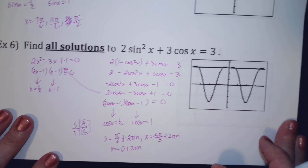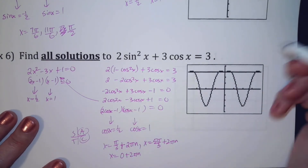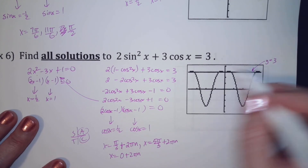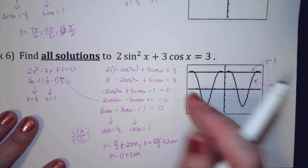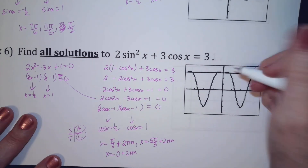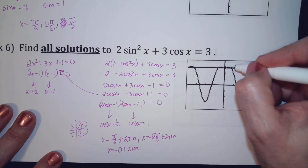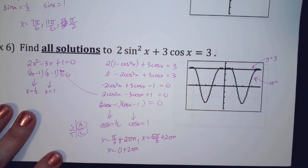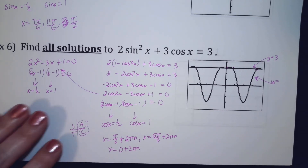I graph this a little differently — I graph y equals 3 and y equals 2 sine squared x plus 3 cosine x together. Looking at the intersections: they're crossing at 0, crossing at pi over 3, and they don't cross again until 5pi over 3. On Desmos, you can see those things really easily.